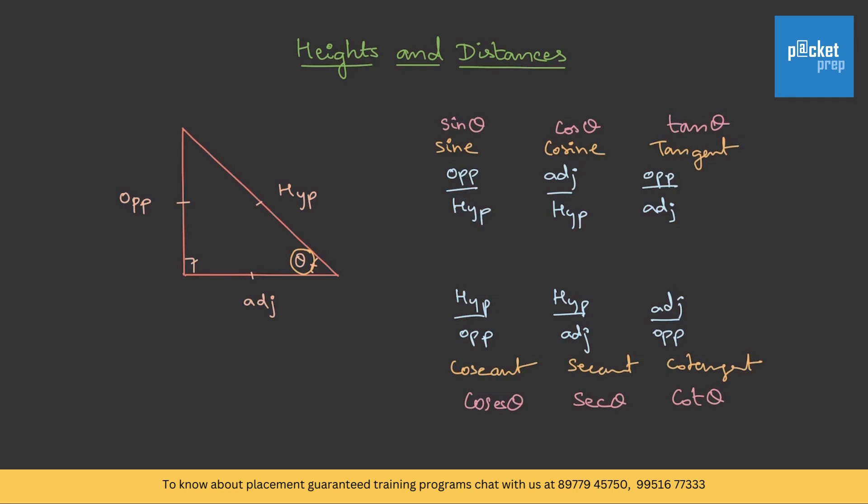Out of these six ratios, the ratio which we will be using frequently is tangent. This is the one we need to memorize. Tan theta is opposite by adjacent. This is the opposite side and this is the adjacent side. The ratio of these two is tan theta. This much basic is enough.